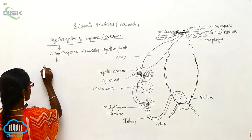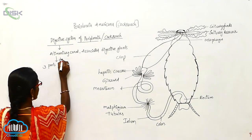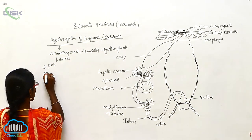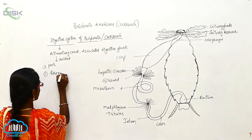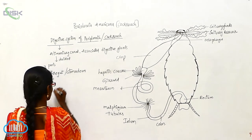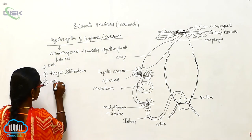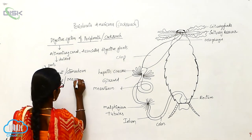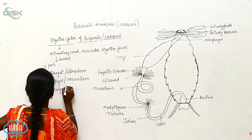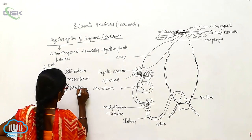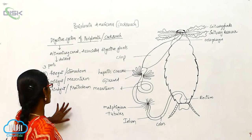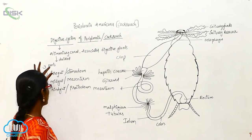The alimentary canal is divided into three parts. The first one is the foregut, that is the stomodeum. The second one is the midgut, or mesenteron. The third one is the hindgut, or proctodeum.